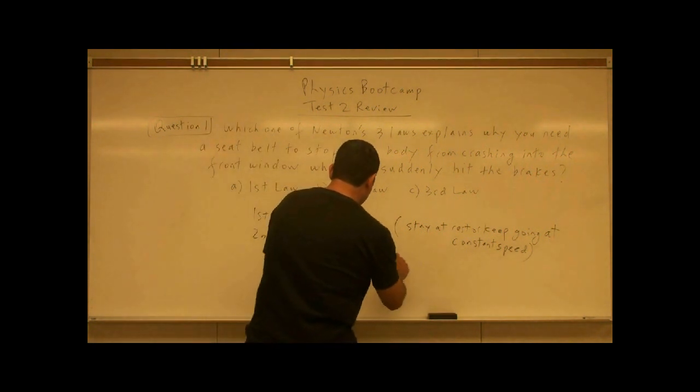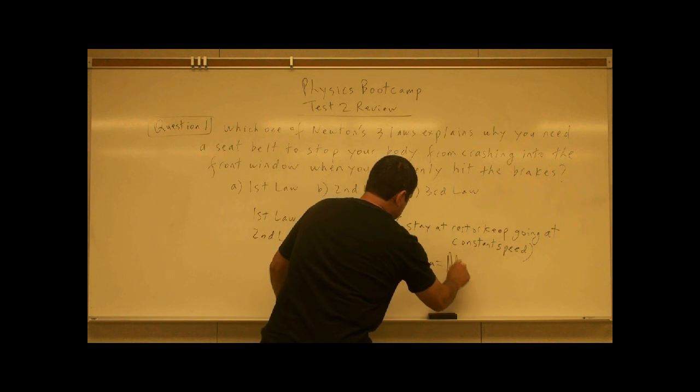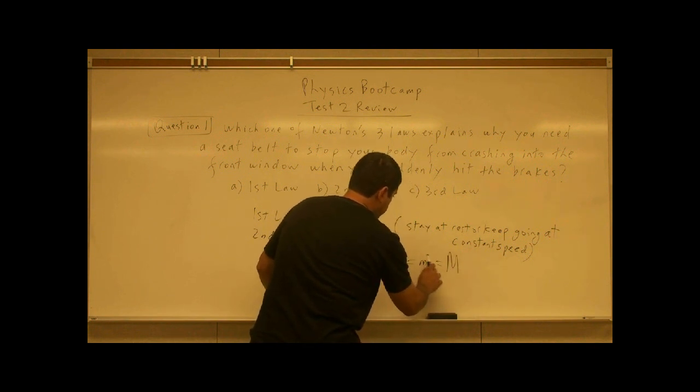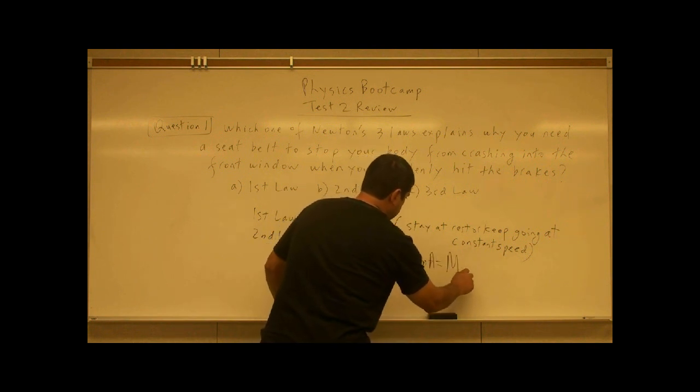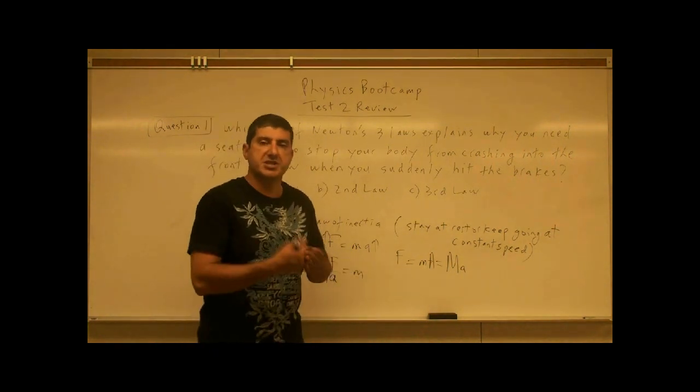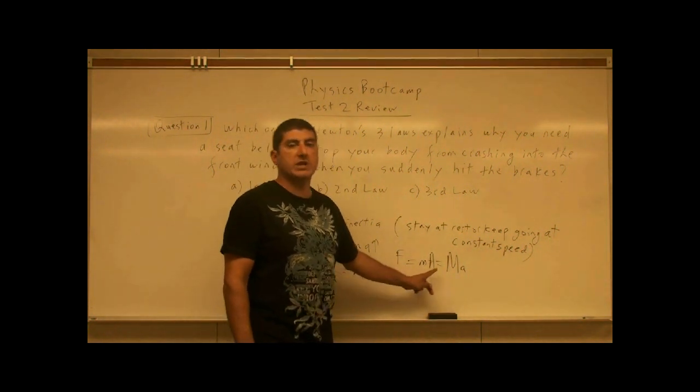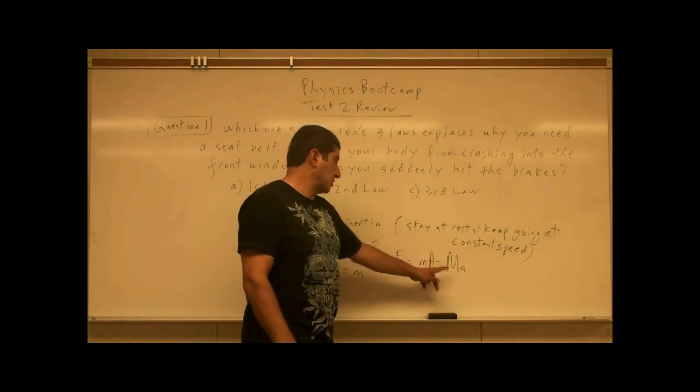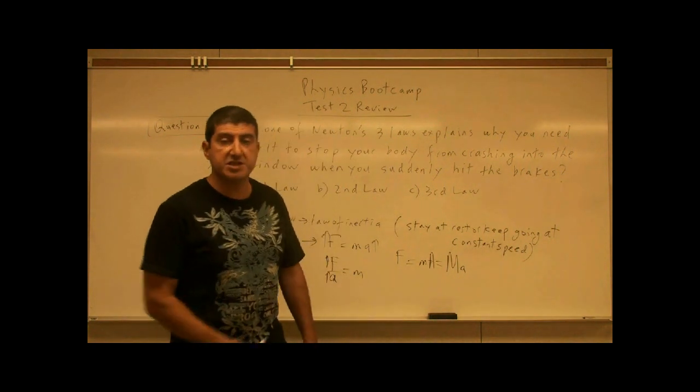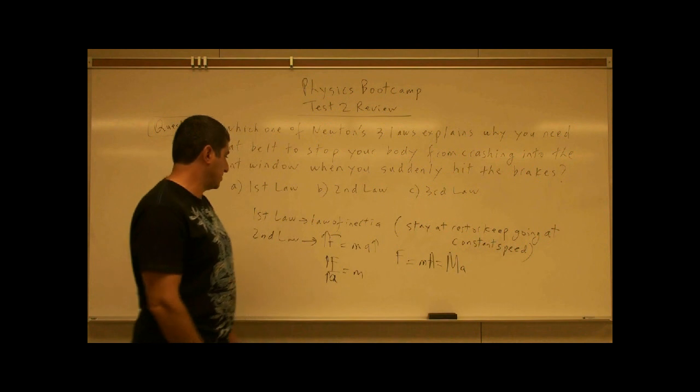The less the force, the less the acceleration. Or you could think of it this way: for a given amount of force, if you have a small mass, the acceleration will be big; for a big mass, the acceleration will be small. So if a given amount of force is exerted on several objects, the object with the least mass will have the greatest acceleration, and the object with the most mass will have the least acceleration. There are a couple different ways you can view the second law.